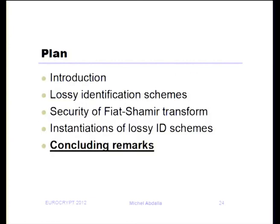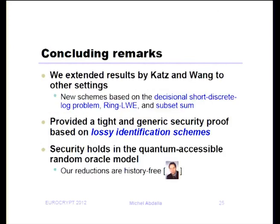To summarize: in this paper, we extended the results of Katz-Wang to other settings. In particular, we gave protocols based on decisional short discrete log, ring LWE, and subset sum problems, with tight generic proofs for what we called a lossy identification scheme. It also seems that our security holds in the quantum-accessible random oracle model, because our reduction is history-free — I discussed that with Mark, and he agreed it should work, though we didn't check all the details.